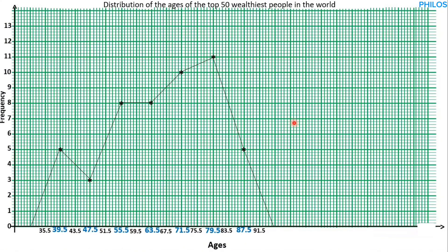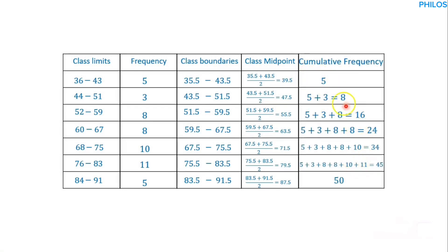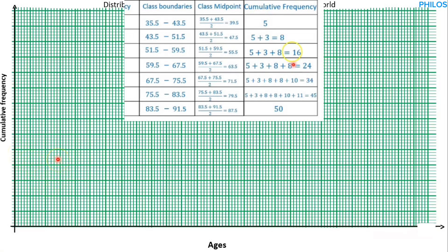Let's go back to our table. For the histogram we used class boundaries and frequency; for frequency polygon we used class midpoint and frequency; but for the ogive we are going to use the upper class boundary and cumulative frequency. In the last tutorial I taught you how to find cumulative frequency. So we have the cumulative frequency here. Let's take our graph sheet. Let's draw the x and y axes as usual. The y-axis this time uses cumulative frequency, not just frequency as we did for the histogram and frequency polygon.